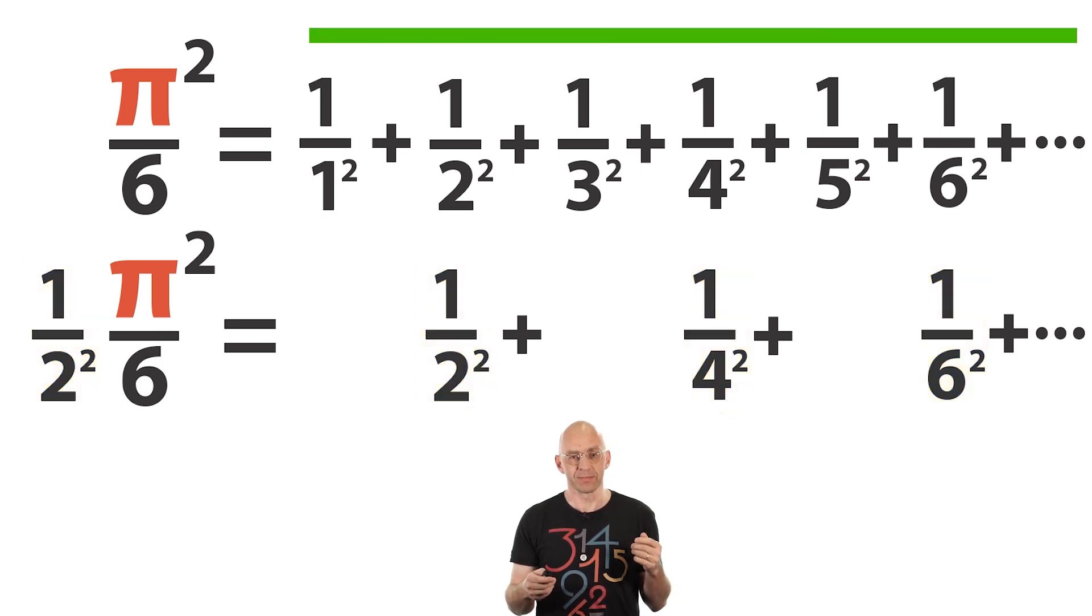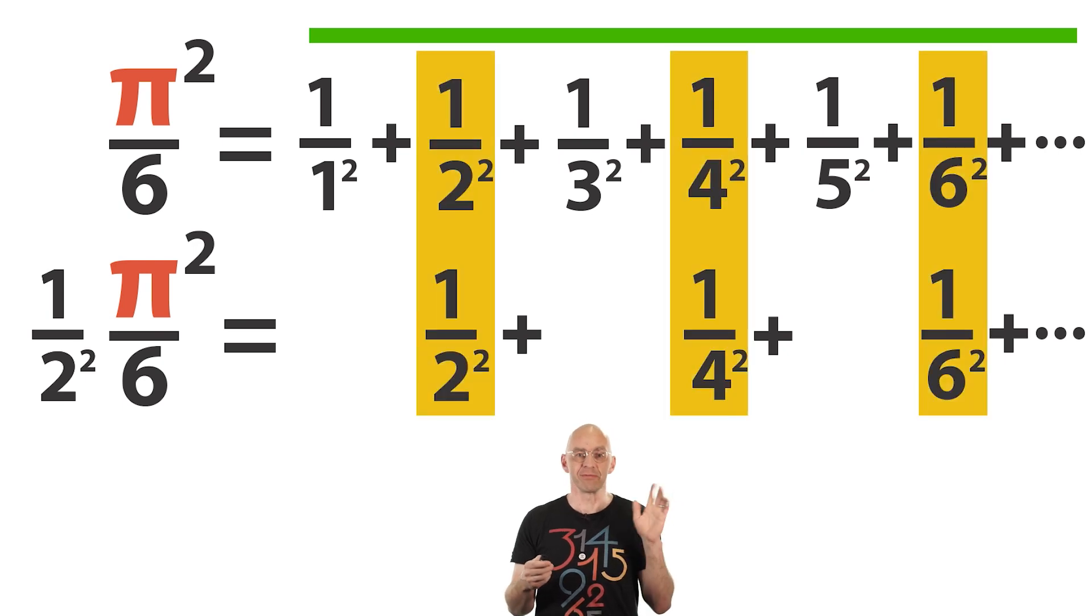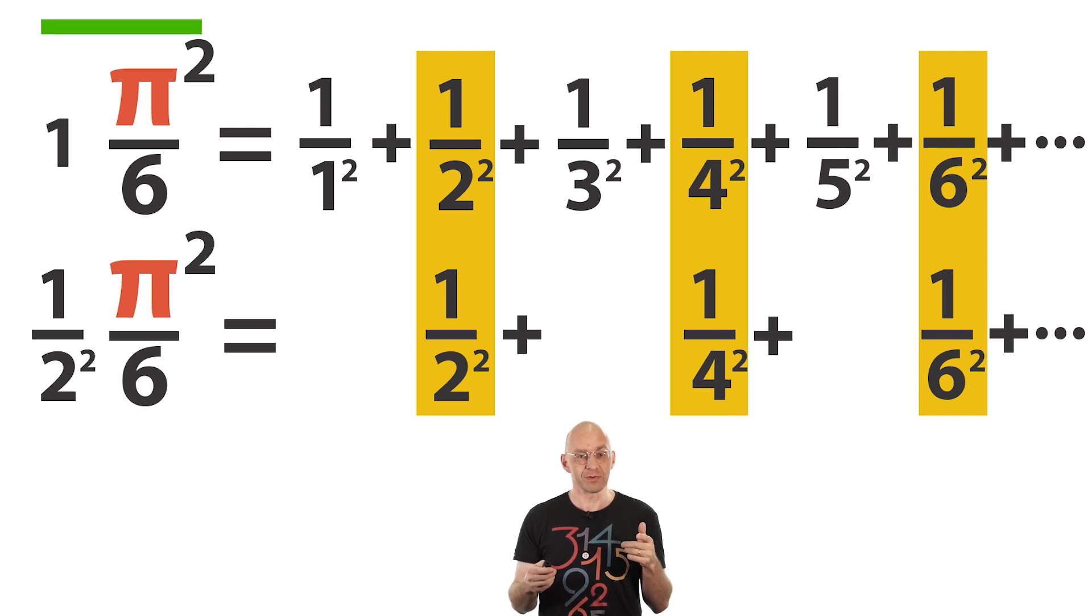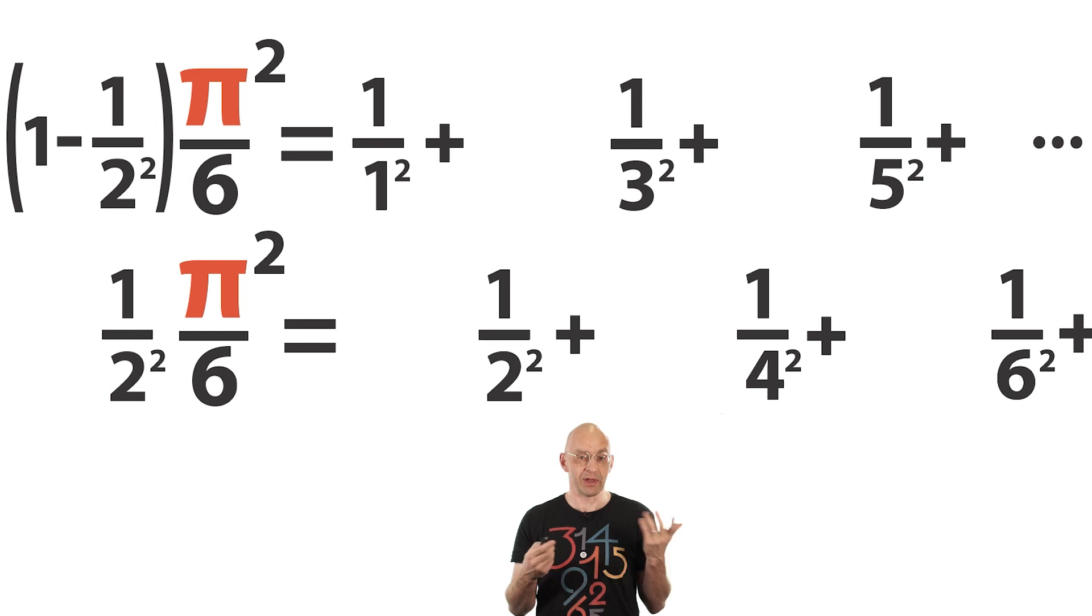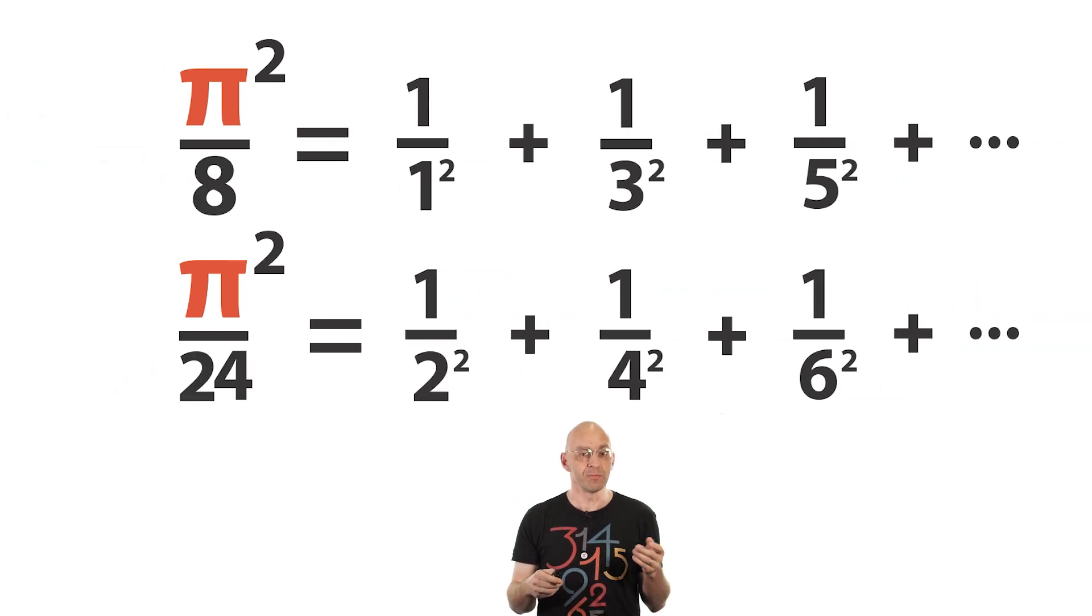Now we'll subtract the bottom from the top. On the right side, notice how nicely things line up there? Beautiful. Okay anyway, so when we subtract every second term on the top gets wiped out, on the left we have 1 times the fraction minus 1 over 2 squared times the fraction and so we get this. And there you have it. Two more beautiful identities for pi, pretty much for free.